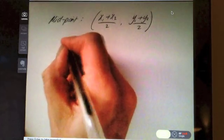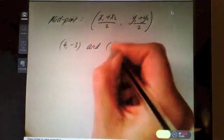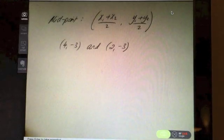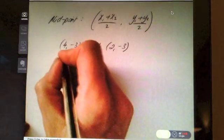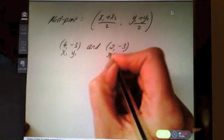Okay, one last question: find the midpoint between (4,-3) and (2,-3). Press pause and see how you get on with this one. First thing, first thing you're going to do as always is label your points: x1, y1, make sure you label them correctly, x2, y2.